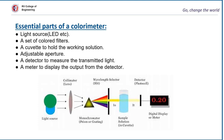First, the colorimeter is calibrated using a standard solution of known concentration. Then, a light ray of a certain wavelength is directed towards a given unknown solution. The light passes through a series of different lenses and filters. The filter allows only the required wavelength of light to pass through and reach the cuvette, where it is transmitted, reflected, and absorbed by the solution. The transmitted light falls on the detector and the output display meter shows the output from the device.